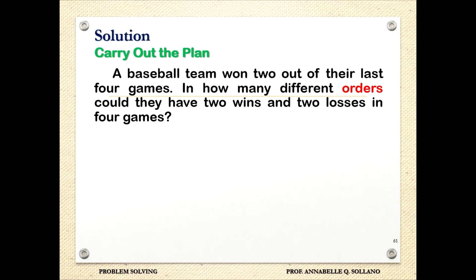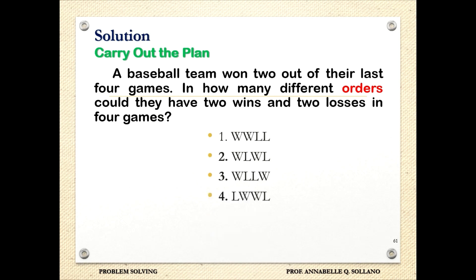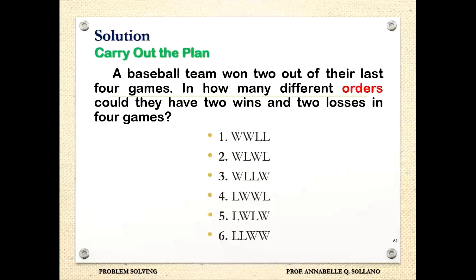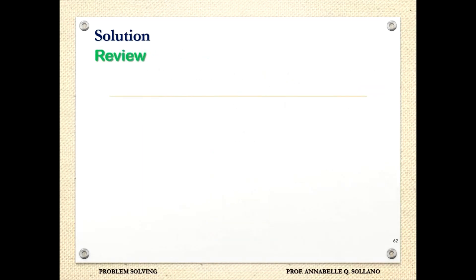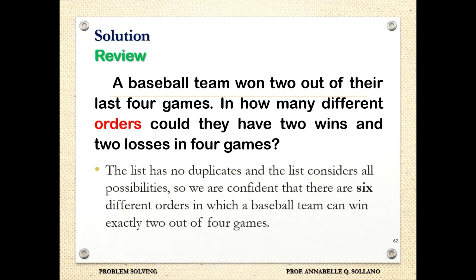Carrying out the plan, we list all orders: WWLL, WLWL, WLLW, LWWL, LWLW, LLWW — there are six. Using the permutation formula, 4 taken 2 is also equal to six. Reviewing: the list has no duplicates and considers all possibilities. We are confident there are six different orders in which the team can win exactly two out of four games.